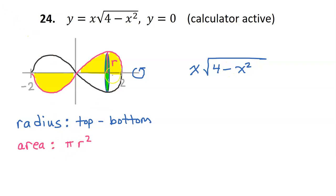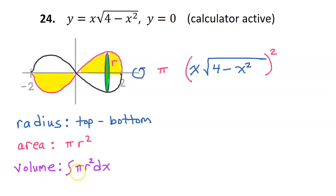Step two is to come up with an expression for the area of a single disk, which is always pi r squared. Since this is an expression for the radius, to turn it into area, all we have to do is square it and put pi out in front. Step three is to form an expression for the volume by integrating the area. Because the disks are stacked up from left to right, I am integrating with respect to x. The limits of integration are from negative 2 to positive 2.